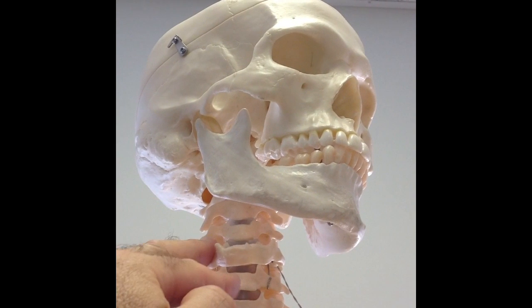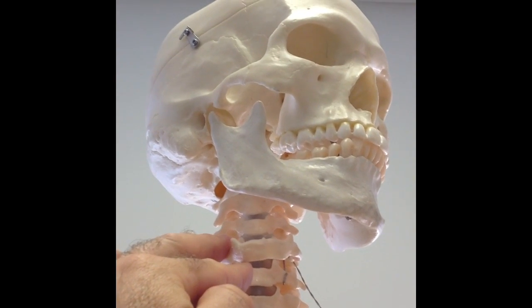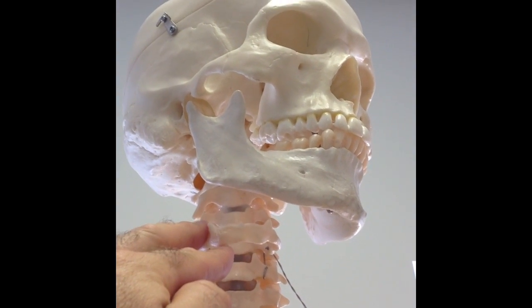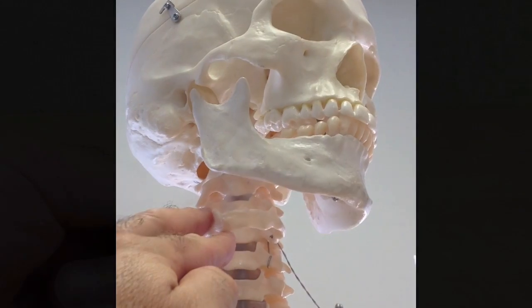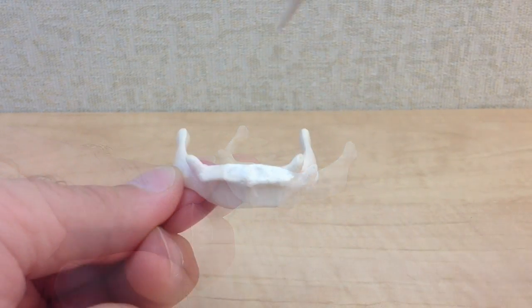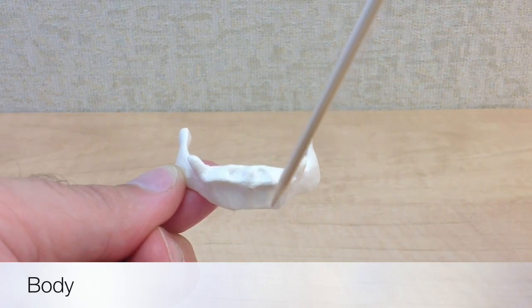The hyoid bone functions in providing support for the tongue and its associated muscles, and for various other parts of the pharynx and neck. The bony landmarks of the hyoid bone are the body. This is the anterior, horizontal part of the bone.